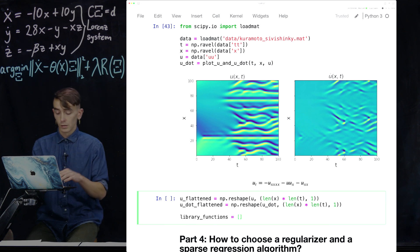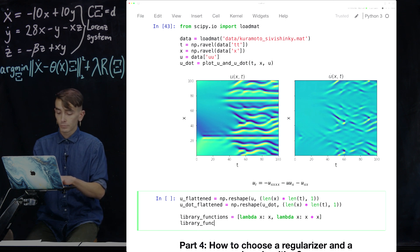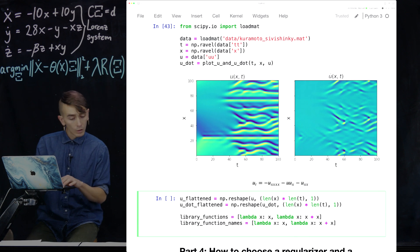Then we're going to use again, a custom library with some simple lambda functions. So we're going to use linear functions of the variables and quadratic functions of the variables. So that it looks like this.